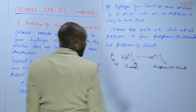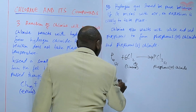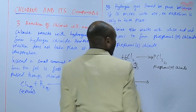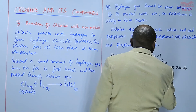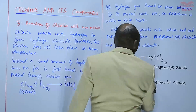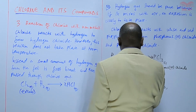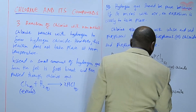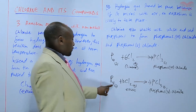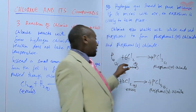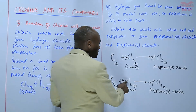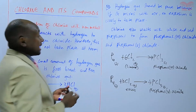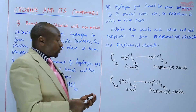If chlorine is in excess, then the phosphorus will combine with chlorine in excess to form phosphorus pentachloride (PCl5). So those are the two chlorides formed by phosphorus. Phosphorus forms PCl3 when there is a limited supply of chlorine, and PCl5 when there is excess chlorine. So basically, phosphorus is another non-metal, just like hydrogen, that reacts with chlorine.